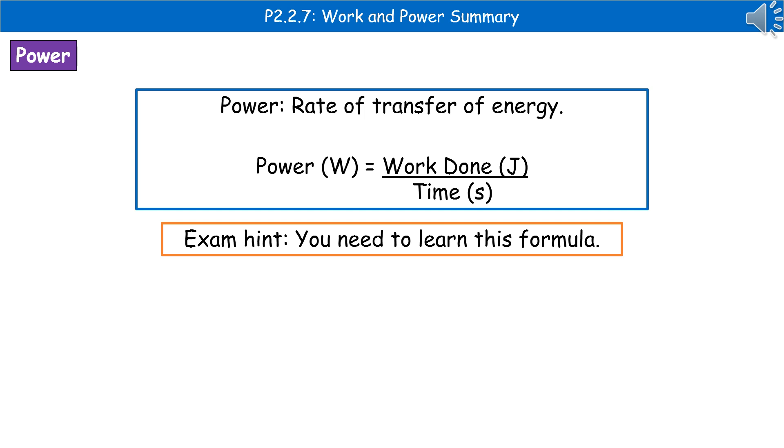One of their old favorites used to be to have a two-step calculation here. They would give you the information to be able to calculate the work done with time so that you could work out power. They wouldn't just give you work done in the actual question itself. You'd have to work out work done first of all, and then go on to the power calculation. Make sure you've learned that formula, because if you don't know the formulas, you can't answer the calculation questions.